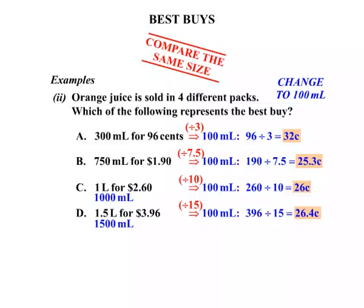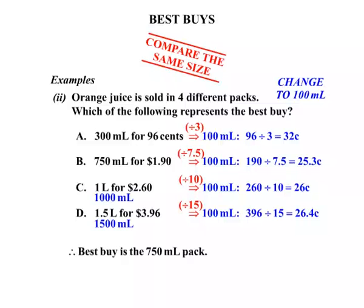Now we look at comparing the prices. We can see that 25.3 cents per 100ml is the cheapest, and that was pack B. So the best buy is the 750ml pack. Okay, that concludes our lesson — good luck with your questions.